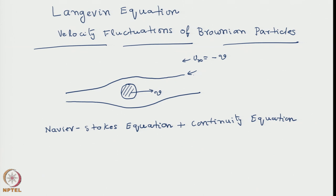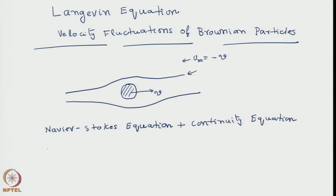The Navier-Stokes equation is basically the conservation of momentum. Because of the existence of a velocity profile in the neighborhood of the particle and because of the property of viscosity, certain tangential as well as normal stresses get developed onto the particle, as a result of which it experiences a force upon it. This force is often called the drag force. Whenever a particle moves with a certain velocity in a fluid, it experiences what is known as a drag force. From the Navier-Stokes equation, one can derive an expression for this drag force.